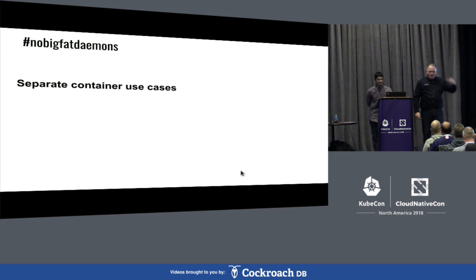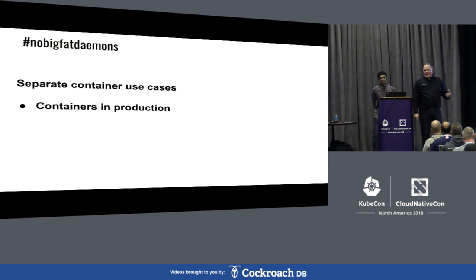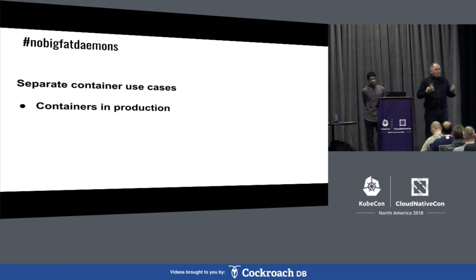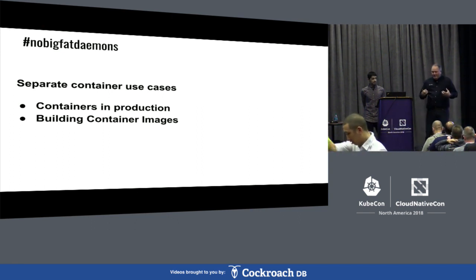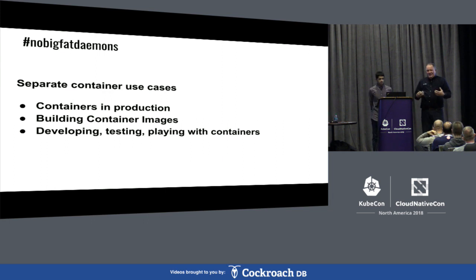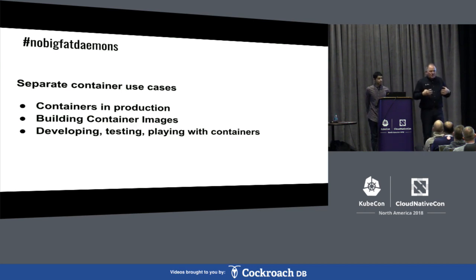We wanted separate use cases. When dealing with containers, I break them down to three main use cases. The first — and the one I push hardest — is containers in production. Most people at this conference are here for Kubernetes, which is all about running containers in production. The security goals of running containers in production are much different than developing or building containers. The second use case is building container images, which requires more privileges than running in production because you're writing to the image store. The third is developing, playing, and getting familiar with containers.